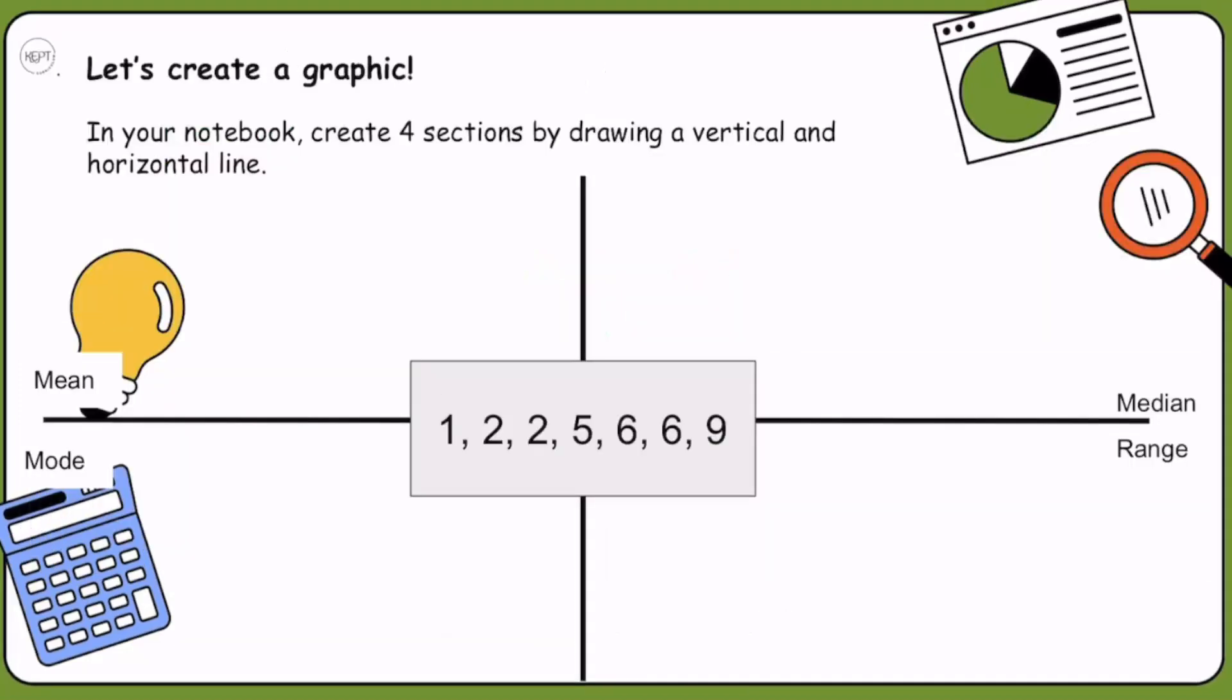Let's start this section by creating a graphic. What I would like for you to do is to take your notebook and fold it into four. If you have the guided notes, this is already printed out for you. We're going to use each section to represent the different aspects that we are looking for in this data set. We're going to start with the mean.